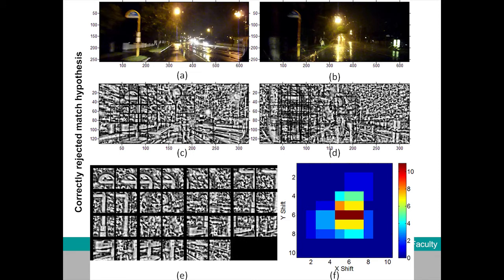This is an example of the most challenging aliased false match in the dataset — two images of two different places which just happen to look very similar. The bus stop is in the same position, the light is in the same position, and the patch match pairs are actually matching these features. But when you look at the two-dimensional histogram of matching shifts, you can see that it's not as spatially consistent, and this is how the system is able to reject this match.